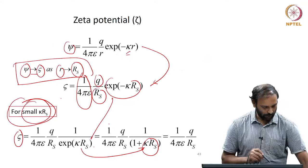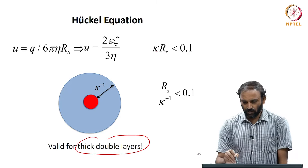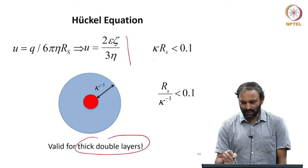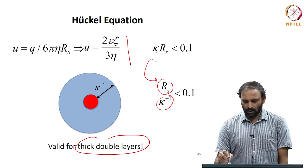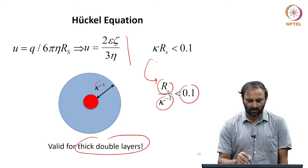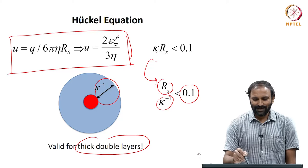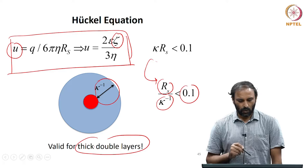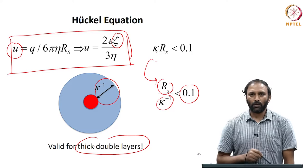The Hückel equation is valid for the thick double layer case. The condition κ·Rs < 0.1 can be rearranged as Rs/(κ⁻¹) < 0.1, meaning the thickness of the electrical double layer κ⁻¹ must be much larger than the particle dimension. This Hückel equation can therefore be used to obtain zeta potential from mobility measurements when the electrical double layer is thick, occurring under very dilute electrolyte conditions.